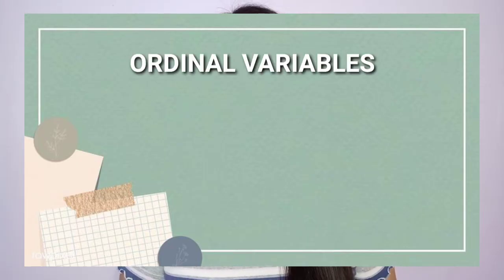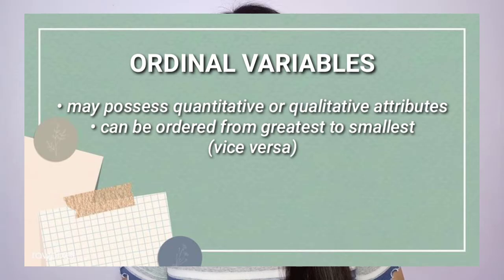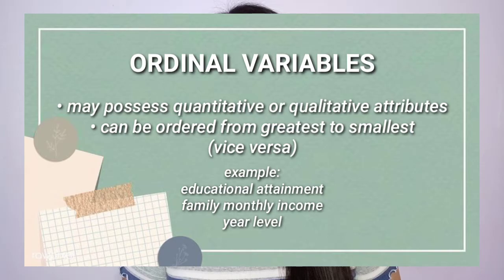Lastly, we have ordinal variables. These may possess quantitative or qualitative attributes. These refer to categories that can be ordered from greatest to smallest, unlike with nominal variables. Examples are educational attainment, family monthly income, year level, among others. Educational attainment can be ranked: elementary level, elementary graduate, high school level, high school graduate, college level, college graduate, units in master's, master's degree holder, doctorate units, or doctorate degree holder. Family monthly income can be 4,000 and below, 5,000 to 9,000, 10,000 to 14,000, 15,000 to 19,000, 20,000 to 24,000, and 25,000 and above.